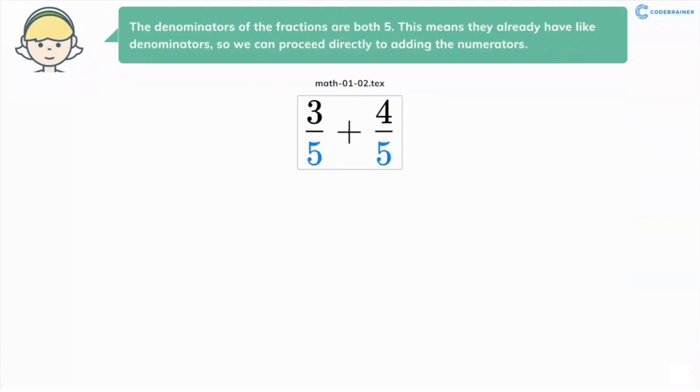The denominators of the fractions are both 5. This means they already have like denominators, so we can proceed directly to adding the numerators.